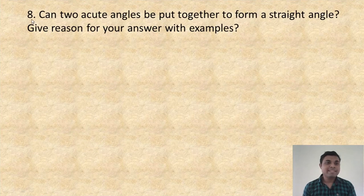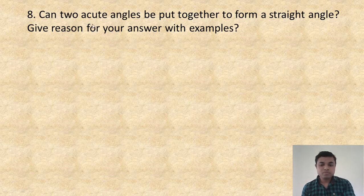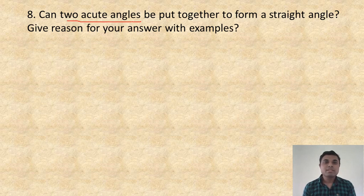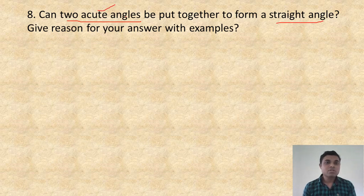Question number 8: can two acute angles be put together to form a straight angle? Give a reason for your answer with an example. An acute angle measures more than 0 degrees but less than 90 degrees. A straight angle measures exactly 180 degrees. So two acute angles — will their sum really be 180 degrees? No, because one acute angle is less than 90, their sum will obviously be less than 180 degrees.